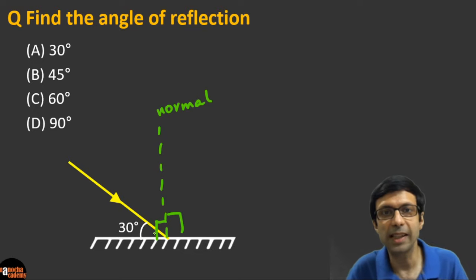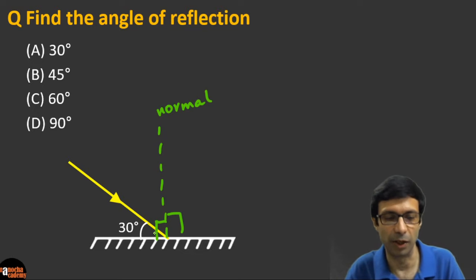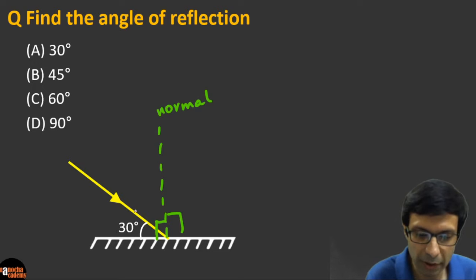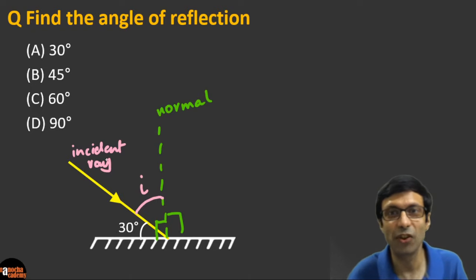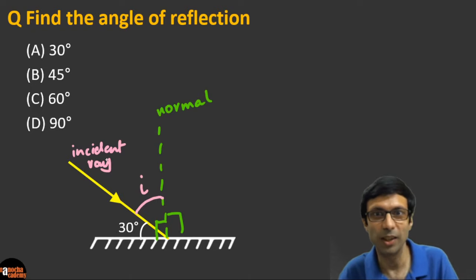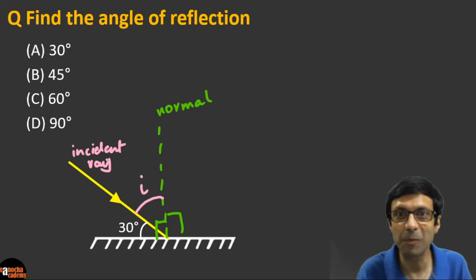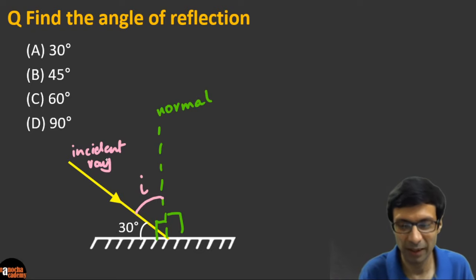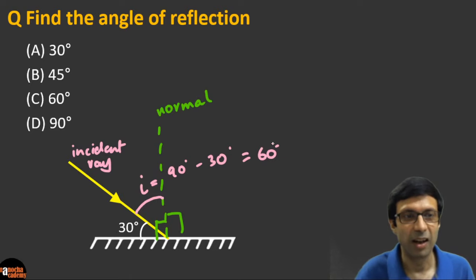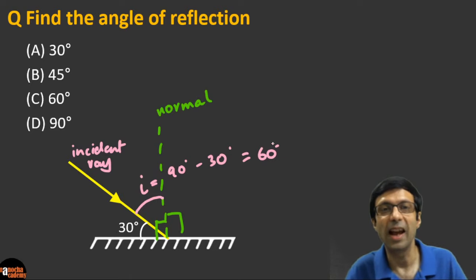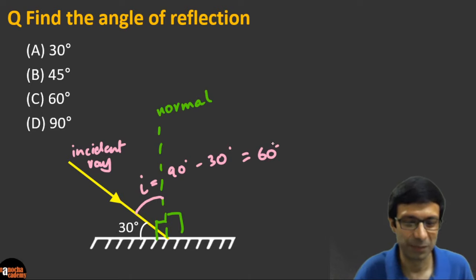Now, what is the angle of incidence? This is our incident ray. The angle of incidence is the angle the incident ray makes with the normal. The angle shown in the diagram is 30 degrees from the mirror surface, so the angle of incidence i = 90 − 30 = 60 degrees.